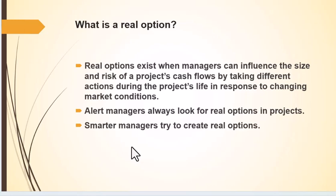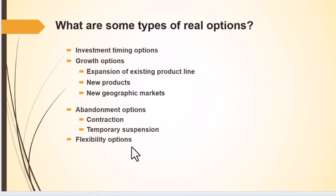Having real options gives opportunities to take remedial action prior to an event or to take advantage of positive opportunities. Types of real options include investment timing options — determining when's the best time to buy, purchase inventory, or increase production — growth options from expanding an existing line or finding new products, abandonment options, and flexibility to make changes quickly to minimize losses and maximize potential returns.